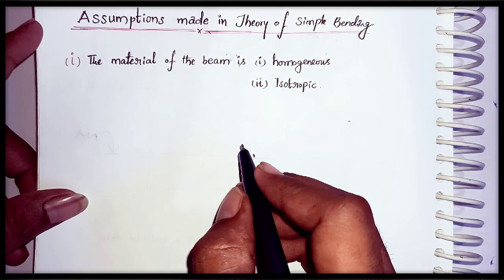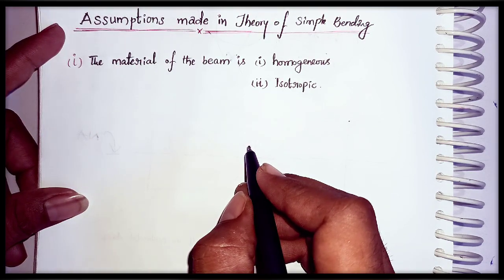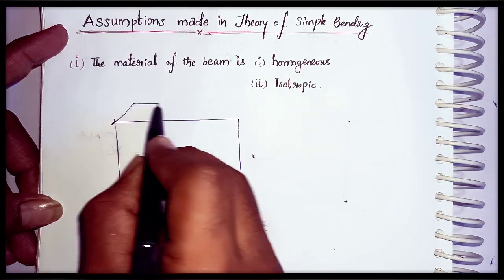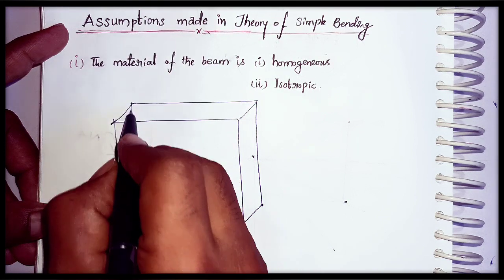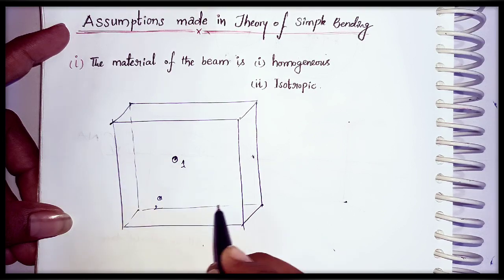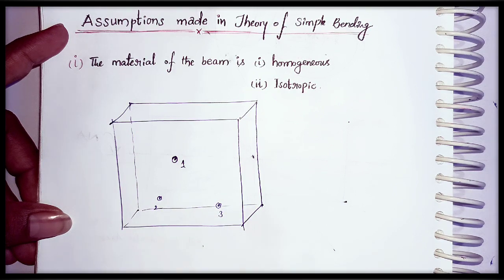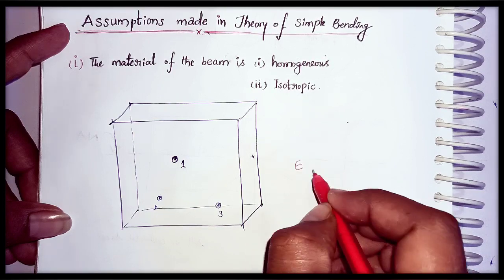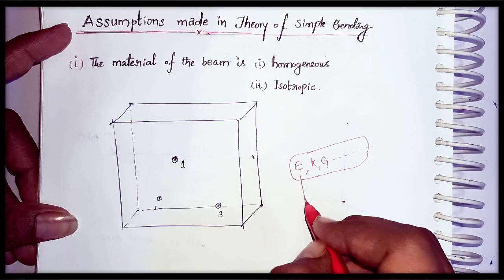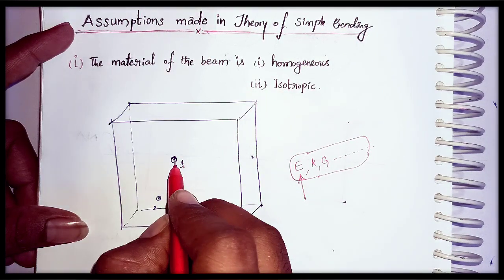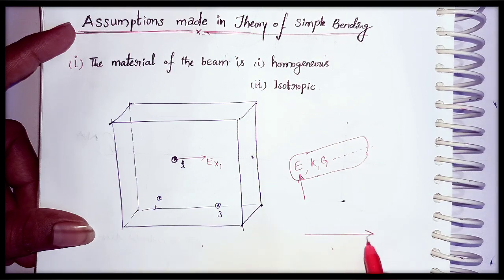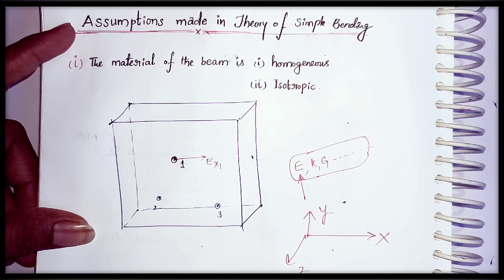To understand the physical meaning of homogeneous and isotropic, let us consider a cubical structure. In that cubical structure I am considering three points: point one, point two, and point three. Let us consider the material properties such as Young's modulus, bulk modulus, and shear modulus. I am considering one property — Young's modulus. At point 1 in the x-direction, Young's modulus is Ex1, in the y-direction it is Ey1, and in the z-direction it is Ez1.